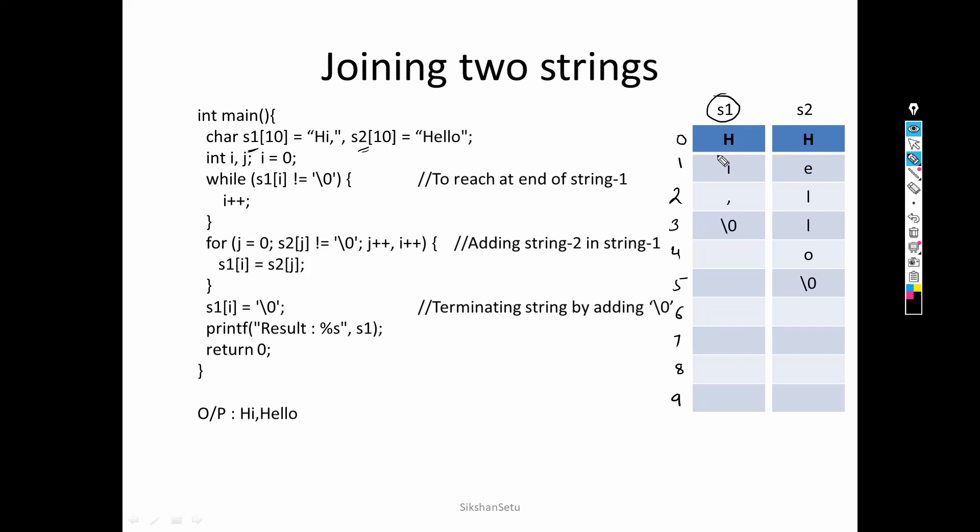After the comma, s1[3] is the null character, which denotes that the string is terminated here. Whenever we are traversing a string and we reach the null character, it means the string ends there — no more characters exist in the string. So the null character plays a very important role: it tells the programmer that the string ends at that position.